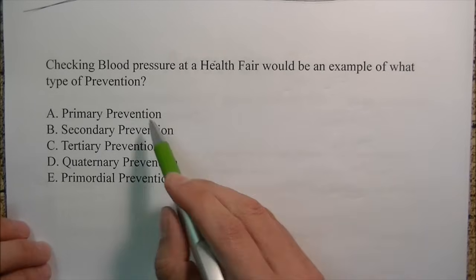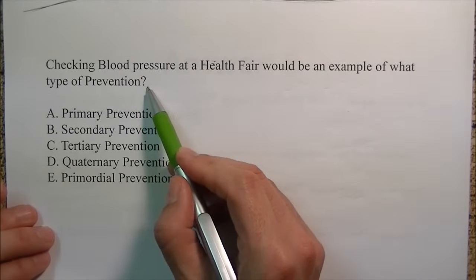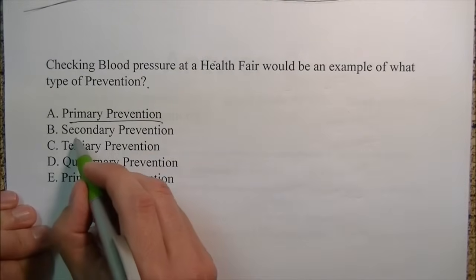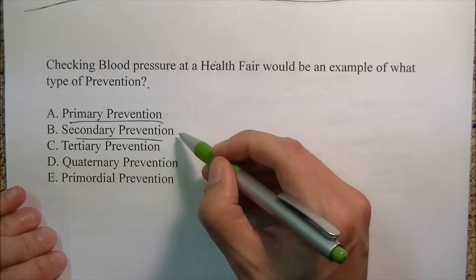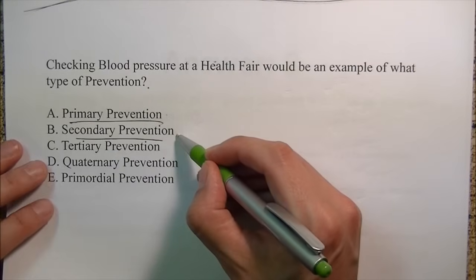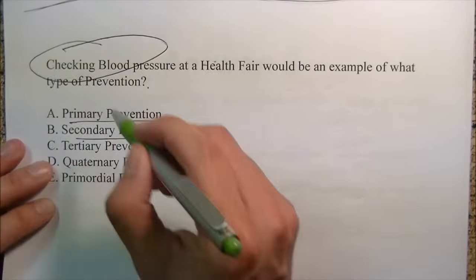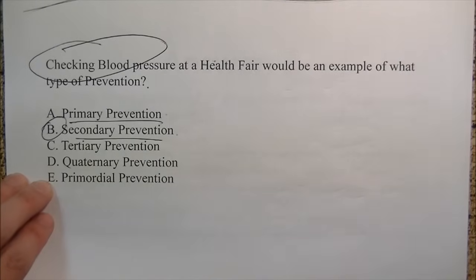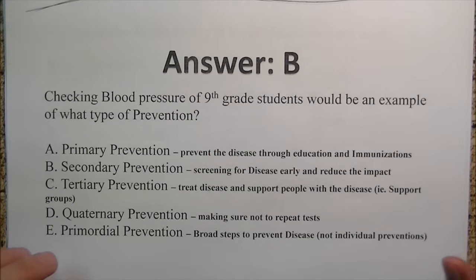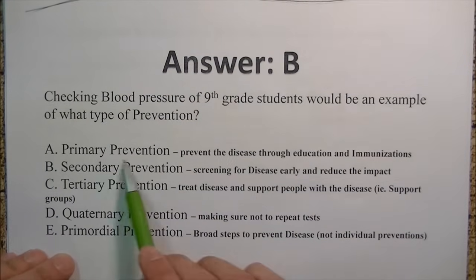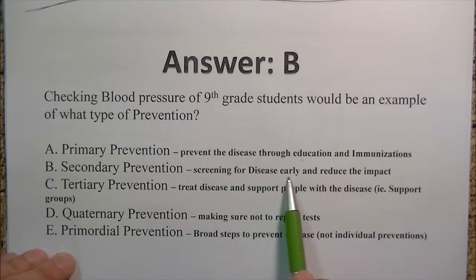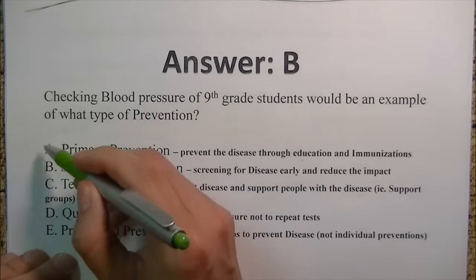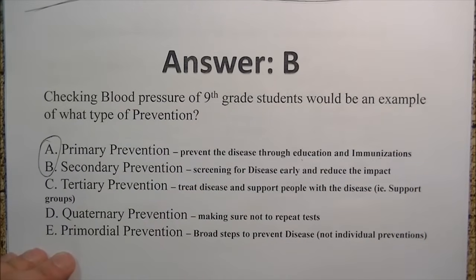Checking blood pressure in healthcare is an example of what type of prevention? Primary prevention is something like immunizations — before the disease happens. Secondary prevention is screening for disease early to reduce the impact, such as checking blood pressure. Make sure you know those two main ones.